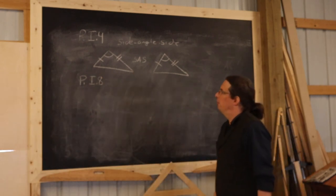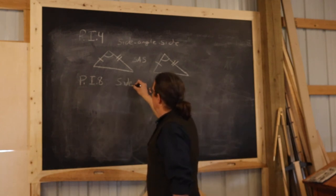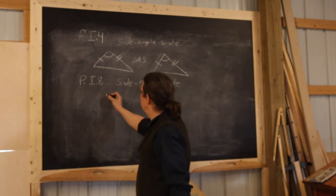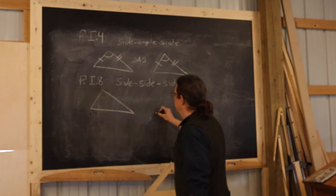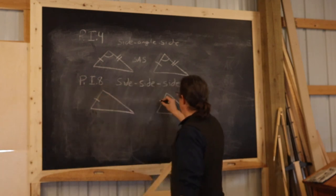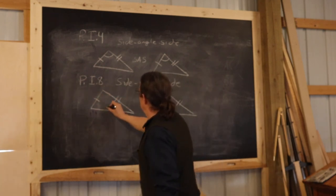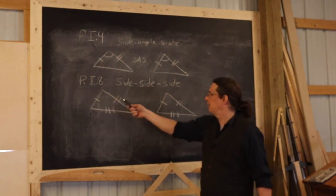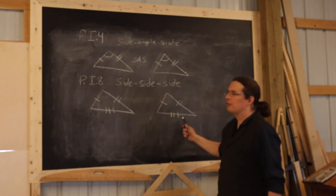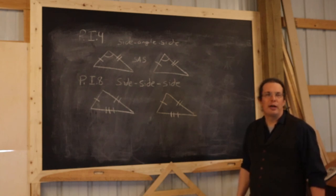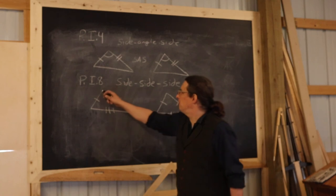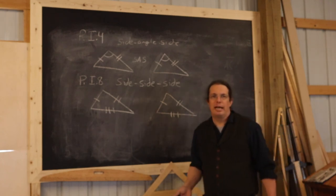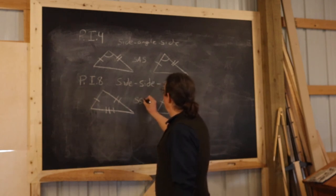Proposition Eight of Book One gives us the Side-Side-Side relationship between triangles. It states that if you've got two triangles and you know that each of the three pairs of corresponding sides are equal to one another — this side equals this side, this side equals this side, and this side equals this side — then you can conclude that the remaining corresponding parts of those triangles are also equal: this angle equals this angle, this one equals this one, this one equals this one. So three pairs of equal sides is enough to get you equality of all three pairs of angles.